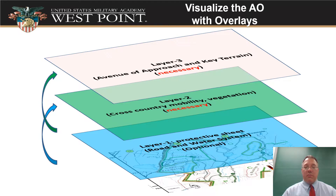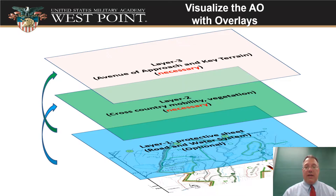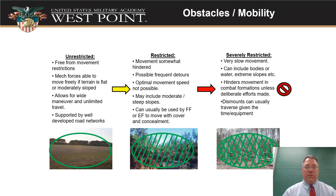The next layer we want to talk about is our mobility layer — you've got to have that on your GTAO. The next thing you go through and put on there is your avenues of approach and your key terrain to show where those are. This should be reviewed from when we talked about terrain analysis.